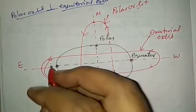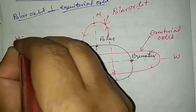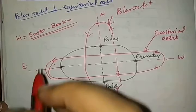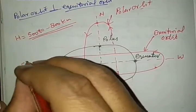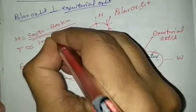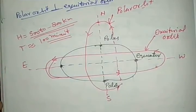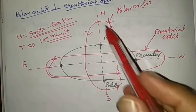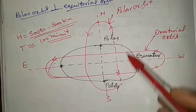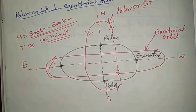And this height from Earth's surface is 500 to 800 km away from the Earth's surface. This is the polar satellite and having a time period of approximately 100 minutes. So in one complete day of 24 hours, it takes more than one revolution around the Earth's surface.